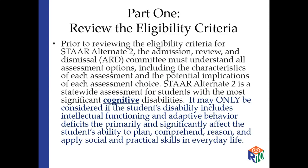The first thing you're going to do is look at the eligibility criteria at the very top of the page. It says that STAR Alternate 2 is a statewide assessment for students with the most significant cognitive disability. A lot of times we think of it as a student who is really low academically — low in reading, low in math, struggling in writing, significantly below grade level multiple years. But that's not the case because we're not looking at just academic skills. That's only one of the five criteria.